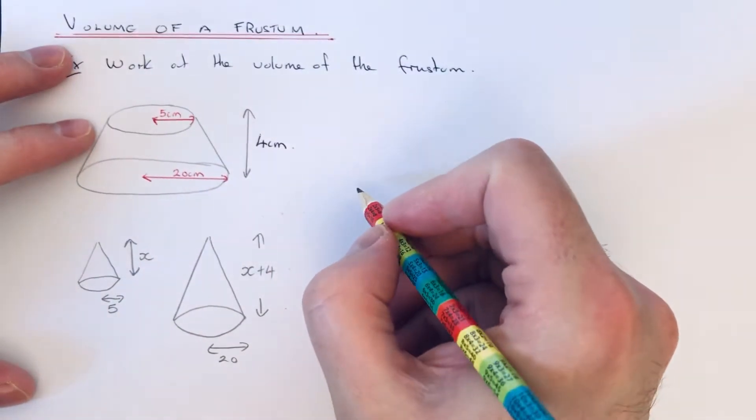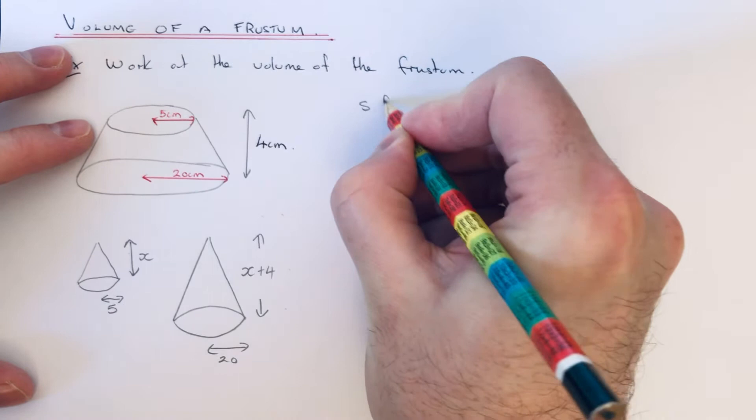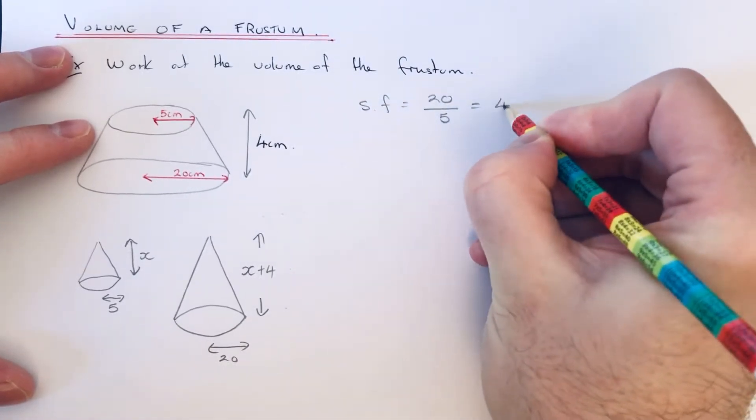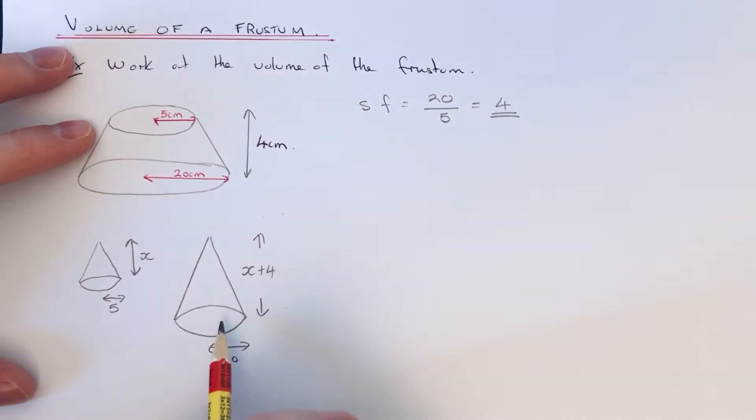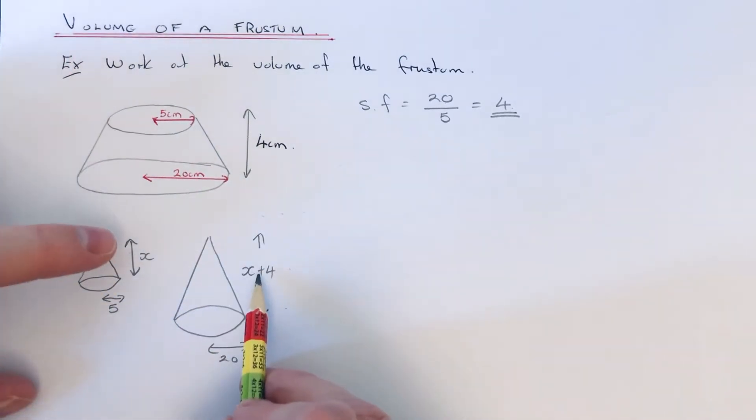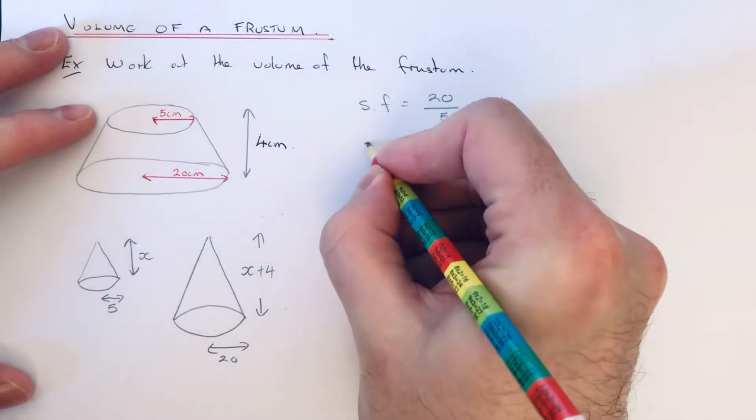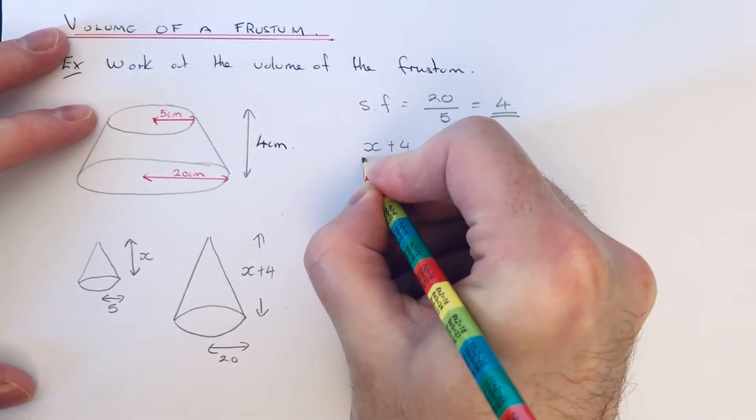If you divide the radius, that will give you the scale factor of the enlargement. So the scale factor would be 20 divided by 5, which is 4. So the big cone is 4 times larger than the smaller cone. So if we divide the heights of the small and large cone together, that will also give us 4.